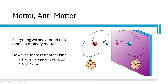We should start by saying some words about matter and antimatter. Everything that we see around us in the ordinary course of our existence is made of ordinary matter, with atoms made with positively charged nuclei and clouds of electrons orbiting around them. But there is another kind of matter out there.